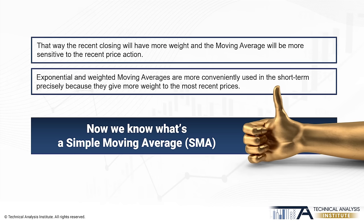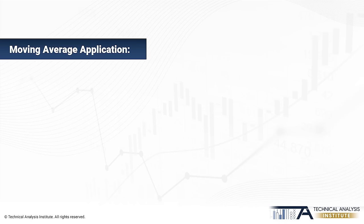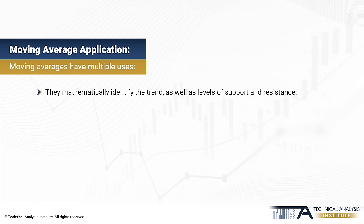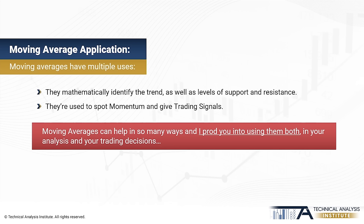Regardless of whether we use exponential, weighted, or simple moving averages, they all have multiple uses. The most obvious is to mathematically identify the trend, as well as levels of support and resistance. They are also used to spot momentum and give trading signals. The reality is that moving averages can help in so many ways that once we talk about them, you will understand why I am trying to get you to use them both in your analysis and your trading decisions. Let's try to cover the most practical aspects that can help you in your trading decisions.